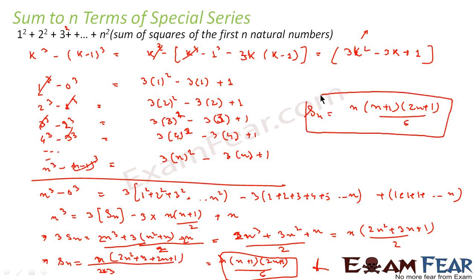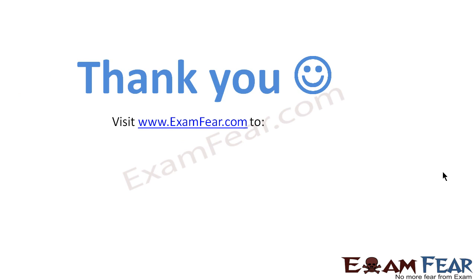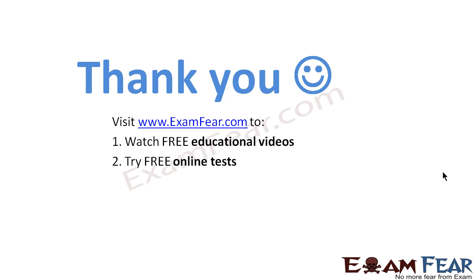So the final answer is Sn = n(n+1)(2n+1)/6. This is the sum of squares of the first n natural numbers. To summarize: we used the identity k³ − (k−1)³ = 3k² − 3k + 1, applied it for k = 1 to n, used telescoping addition, substituted the known sum n(n+1)/2, and solved to get Sn = n(n+1)(2n+1)/6. Thank you — visit examfear.com for free educational videos, online tests, and study materials.